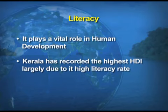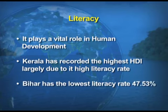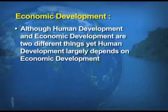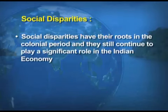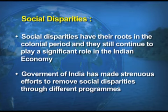Literacy plays a vital role in human development - Kerala has the highest HDI largely because of its highest literacy rate, while Bihar has the lowest literacy at 47.53%. Regarding economic development, economically developed states like Maharashtra, Tamil Nadu, and Punjab have higher HDI values. Social disparities have their roots in the colonial period and continue to play a significant role in the Indian economy, though the government has made strenuous efforts to remove them through various programs.